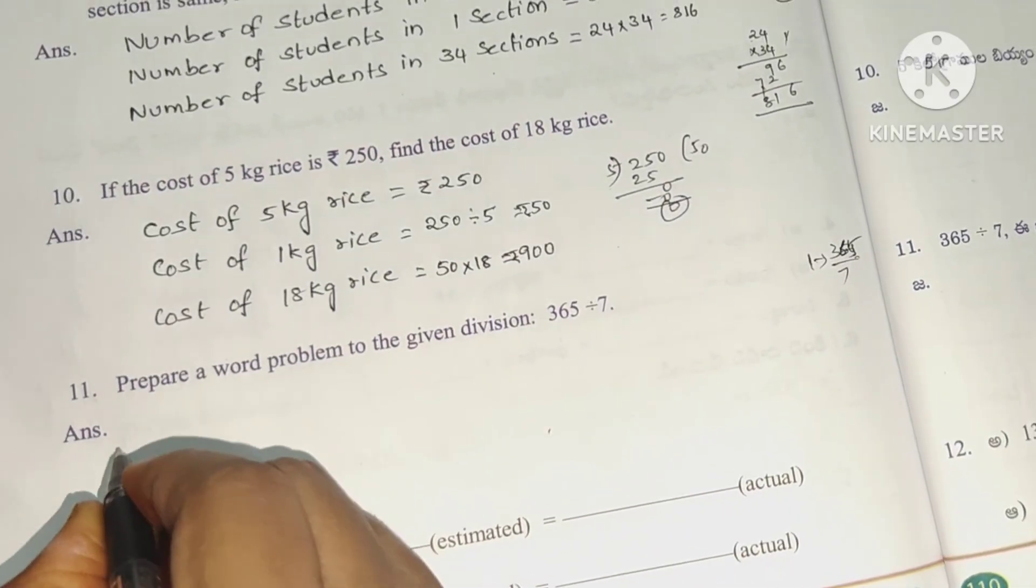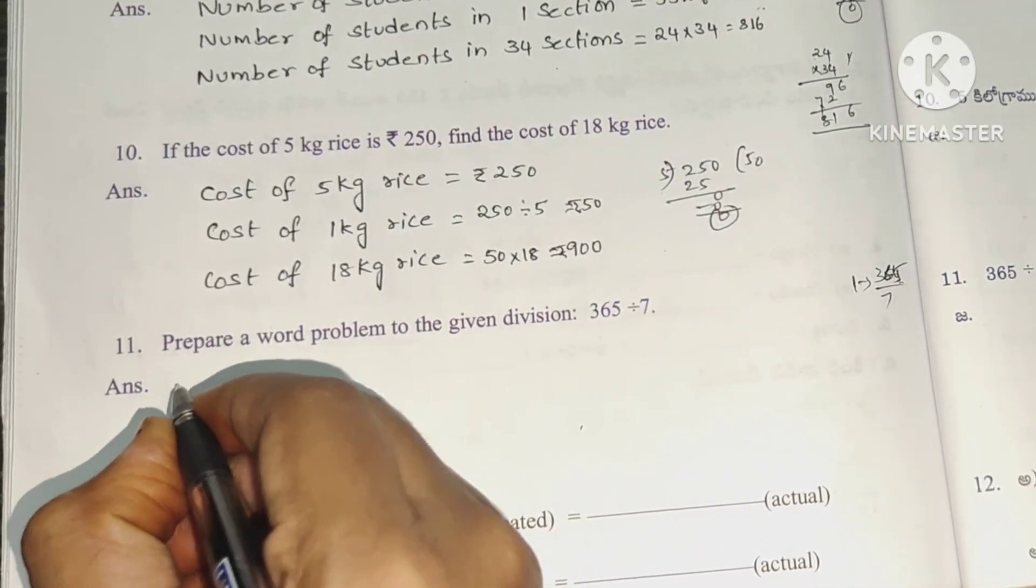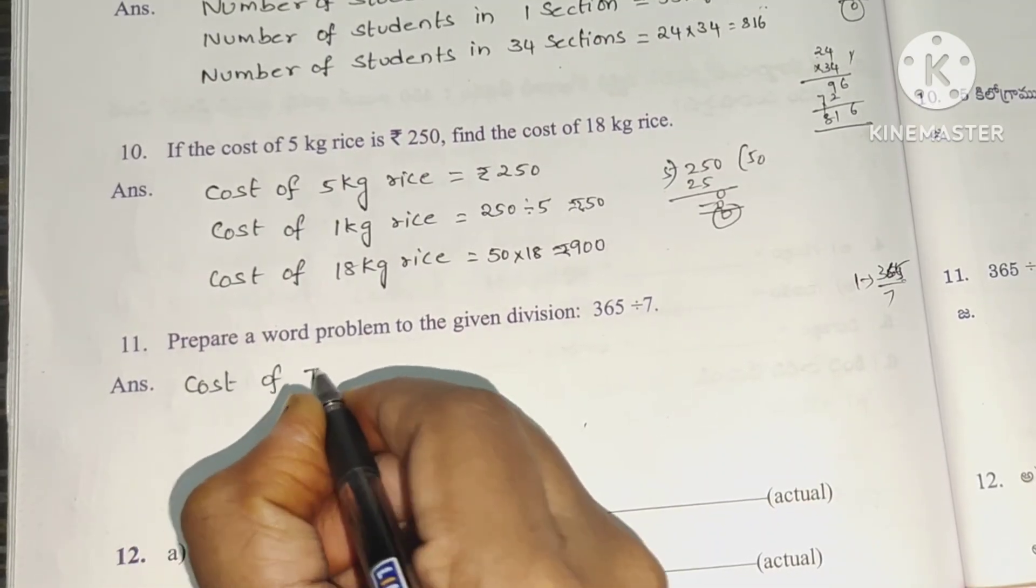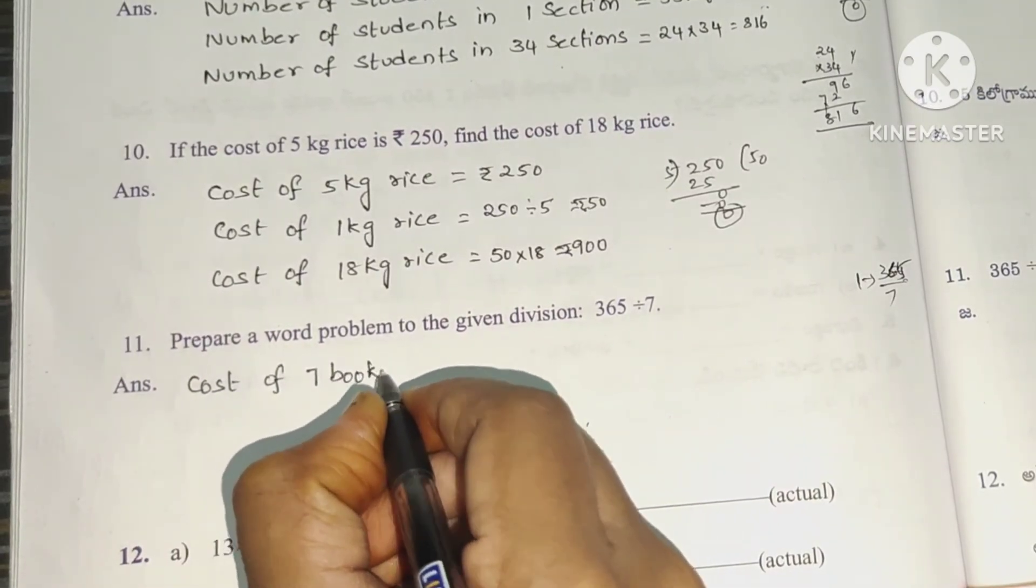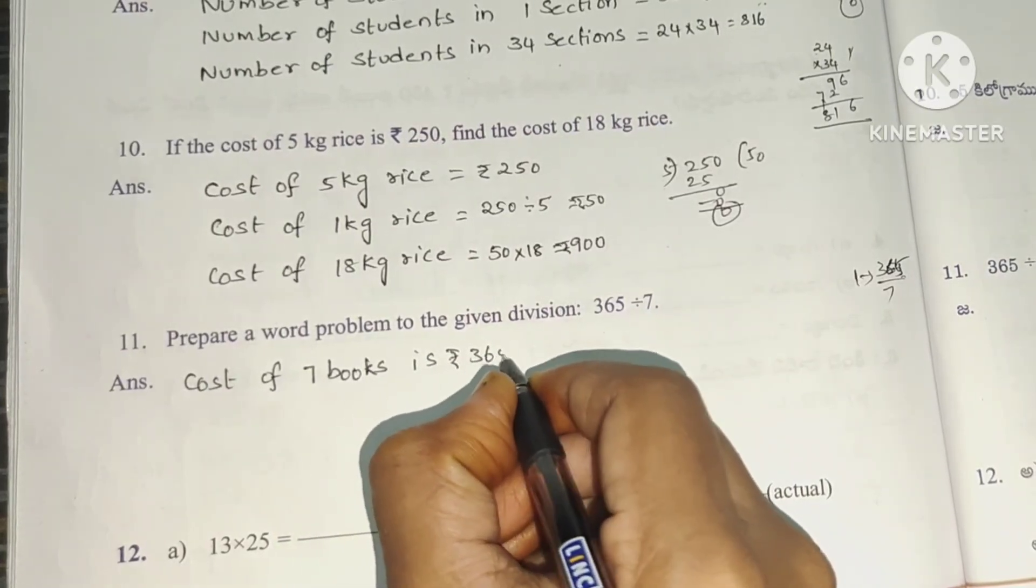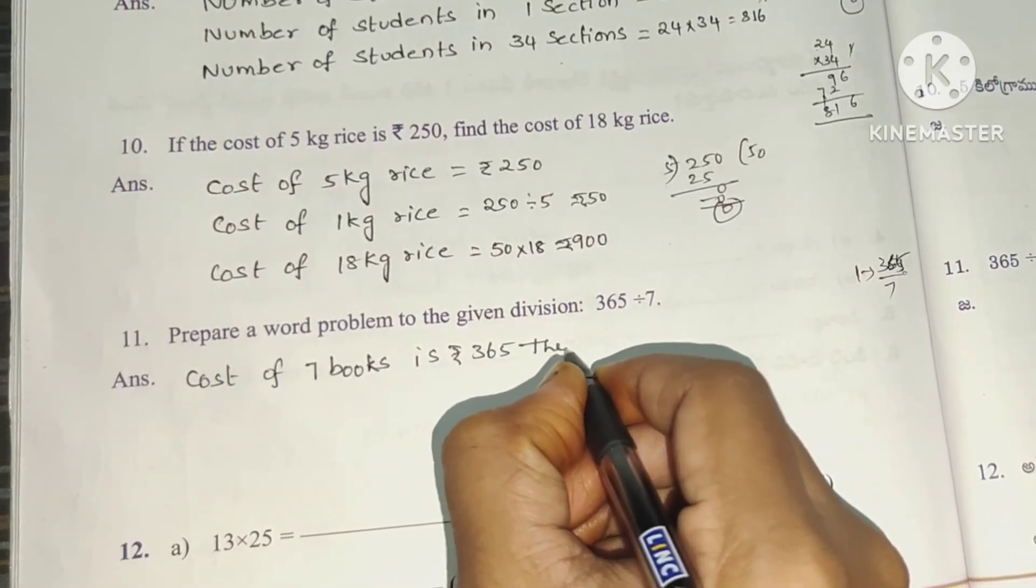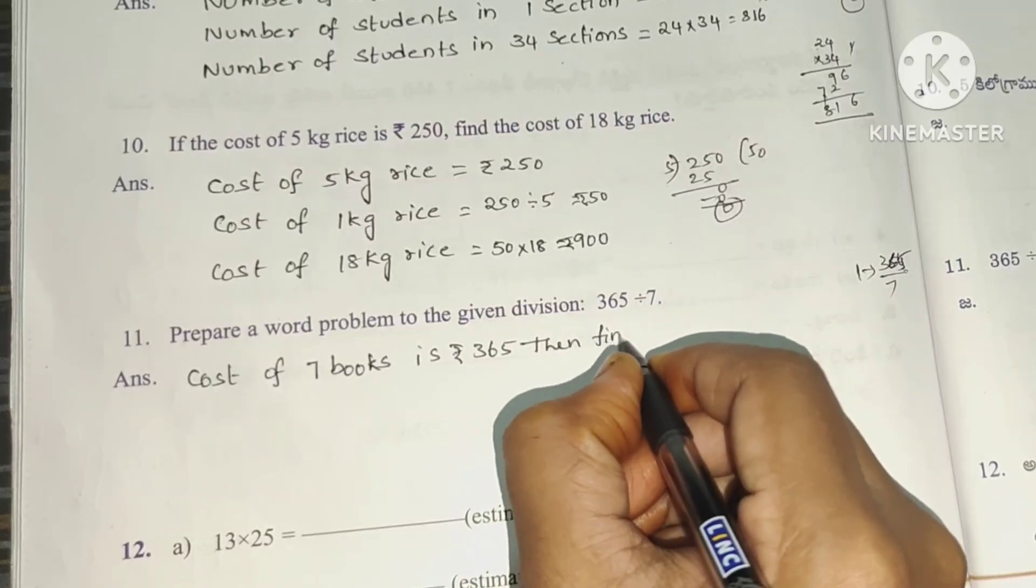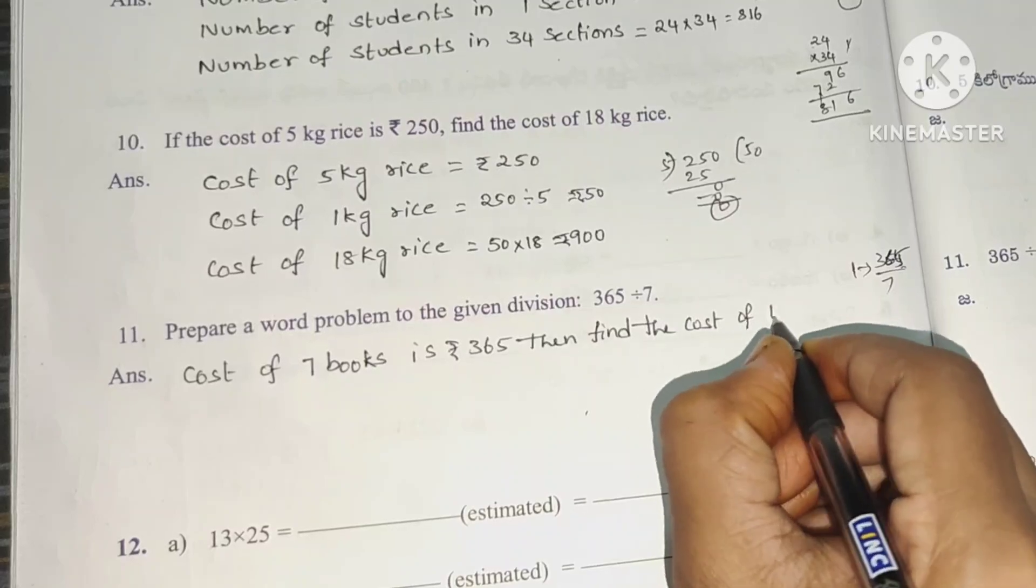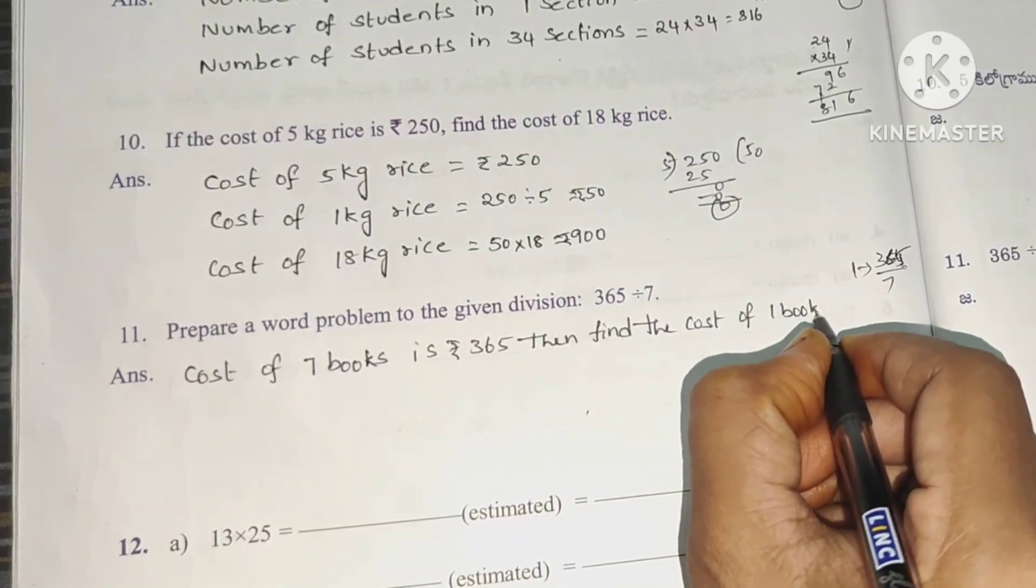Next problem, prepare a word problem for the given division 365 divided by 7. Cost of 7 books is rupees 365. Find the cost of 1 book.